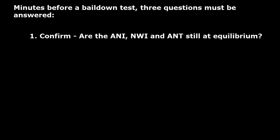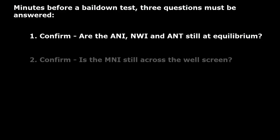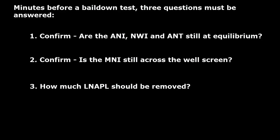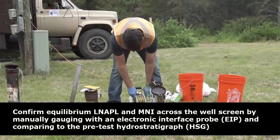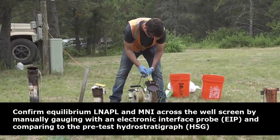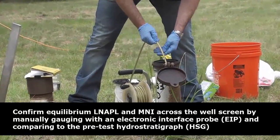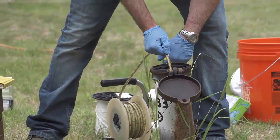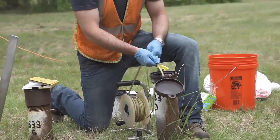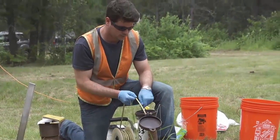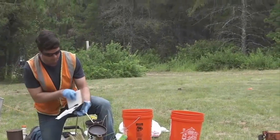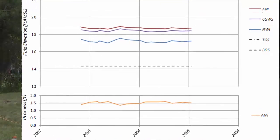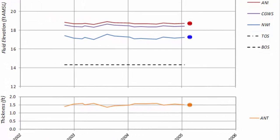Minutes before a bail-down test begins, three questions must be answered. One: are the air-NAPL and NAPL-water interfaces and apparent NAPL thickness still at equilibrium? Two: is the mobile NAPL interval still across the well screen? And three: how much LNAPL should be removed from the well? The test well is manually gauged with an electronic interface probe (EIP) to confirm equilibrium and mobile NAPL interval data. Care must be exercised to ensure that gauge depths to the air-NAPL and NAPL-water interfaces are accurate and precise within the limits of the EIP. This gauging data is then compared to the hydrograph to confirm LNAPL is at equilibrium conditions and that the mobile NAPL interval is still across the screened interval of the test well.